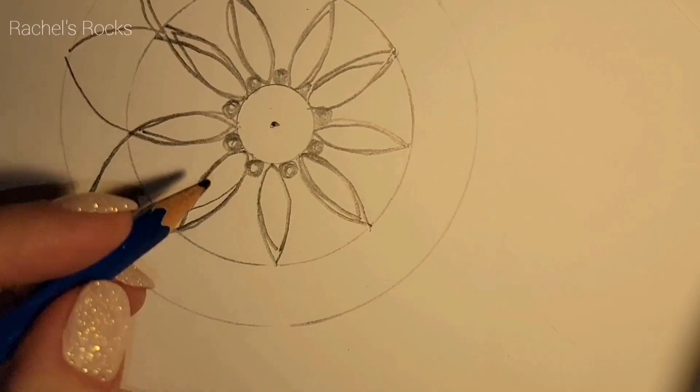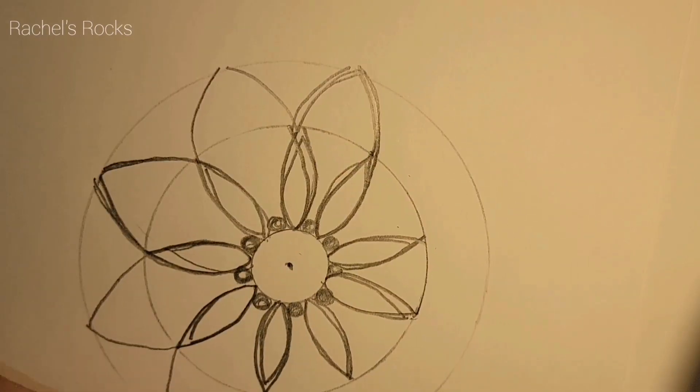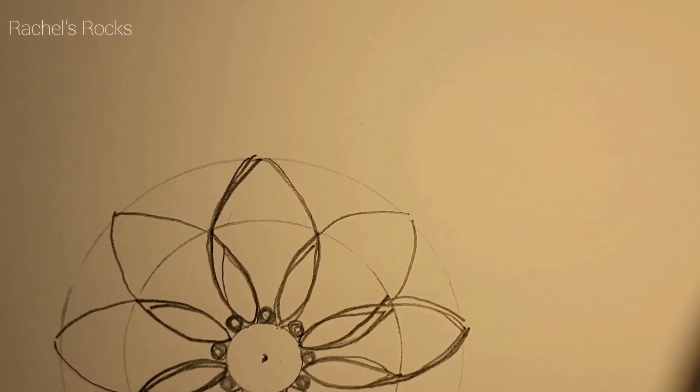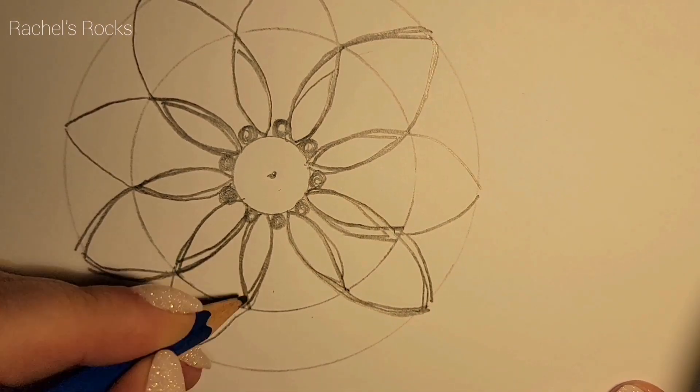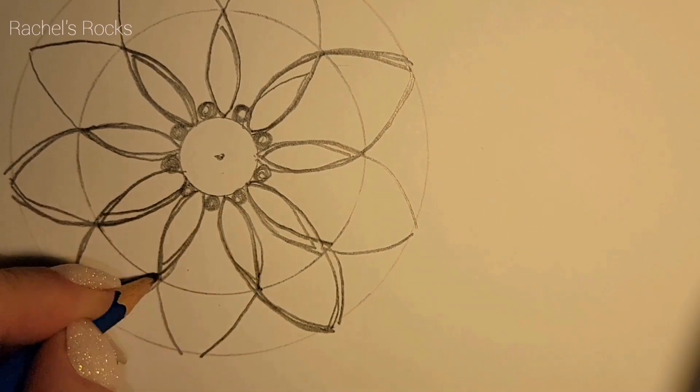But I'm just sketching it out. This is just a sketch. So now you drag those ends down at the tips of your petals. You drag those down and make another circle. Make sure that they're all the same size.